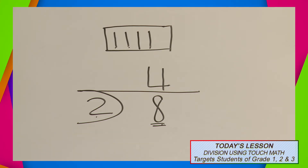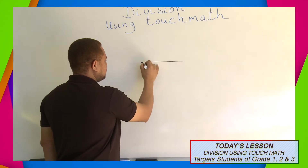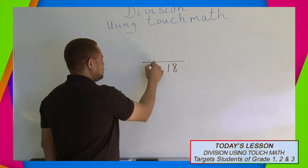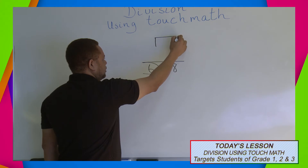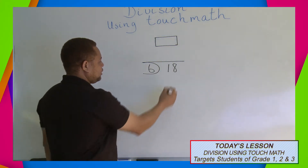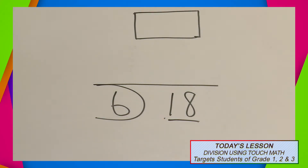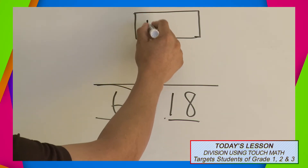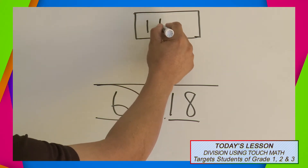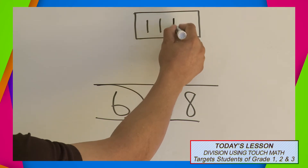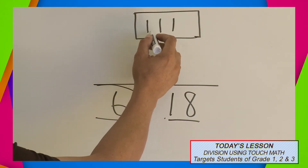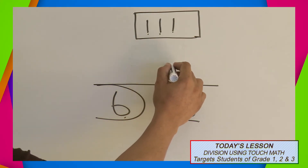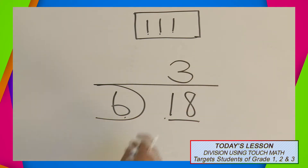Let's do another example. For our second example, we are going to divide 18 by 6. Again, let's go over the vocabulary of division. 18 is my dividend, 6 is my divisor, and now we're looking for the quotient. We are going to skip count by 6, which is our divisor: 6 — put one mark — 12 — another mark — 18 — another mark. Let's count our tally points: 1, 2, 3. 18 divided by 6 is 3.